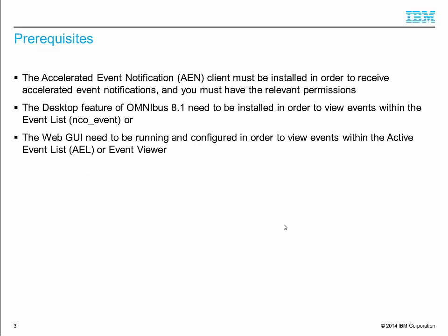These are the prerequisites. The AN client must be installed in order to receive accelerated event notifications. Omnibus desktop features need to be installed to view the events in the event list. The web grid needs to be configured and ready to view the events in the active event list, which is AEL or event viewer.